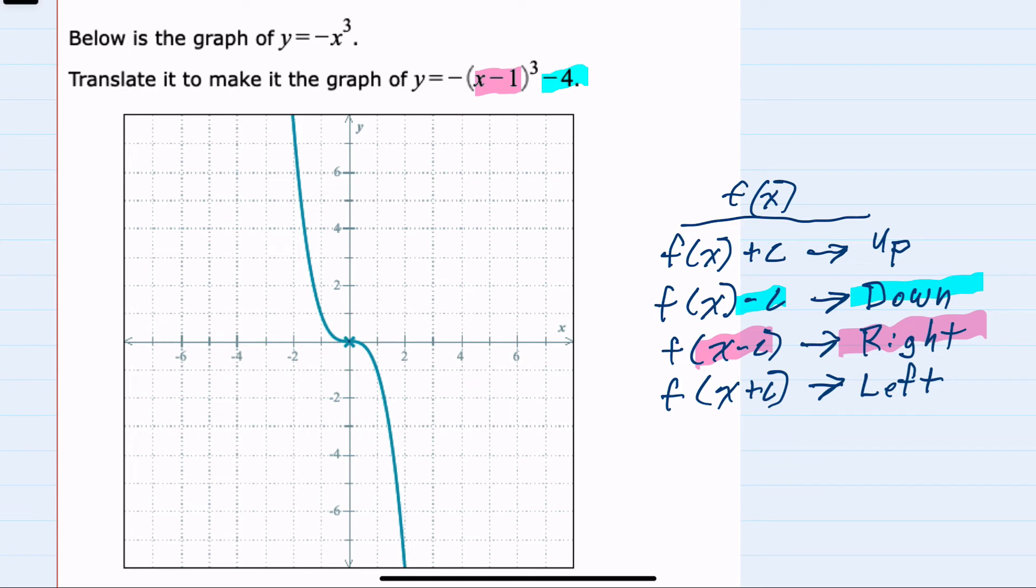So taking our reference point here, we will be shifting down 4 units and then to the right 1 unit. And then we duplicate that shape to graph the translated function.